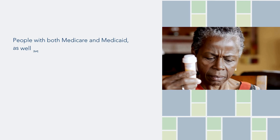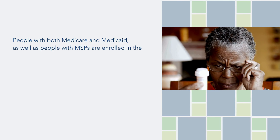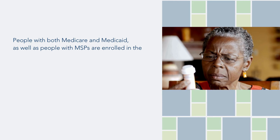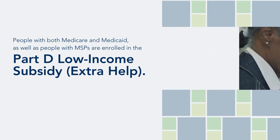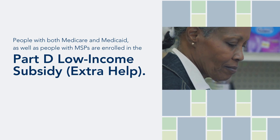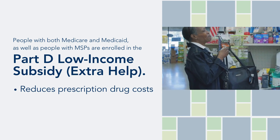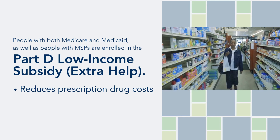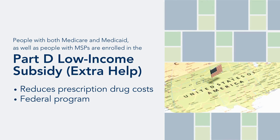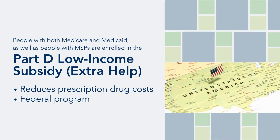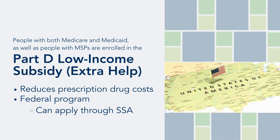All people with Medicare and Medicaid, and all people enrolled in a Medicare savings program, are automatically enrolled in the Part D low-income subsidy, also called Extra Help, which reduces prescription drug costs. Extra Help is a federal program, so if a person is not automatically enrolled, they can apply through the Social Security Administration.